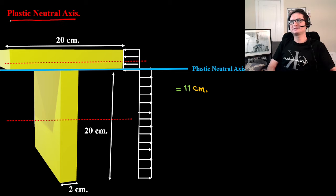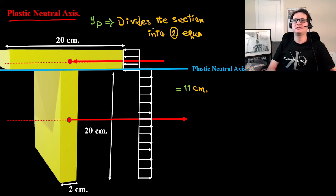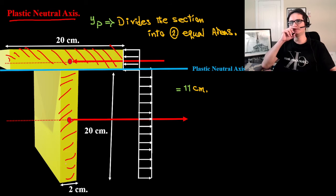For plastic neutral axis, yp divides the section into two equal areas. So if this is 20 times 2 for flange and for web we have 20 times 2, the two areas are equal.